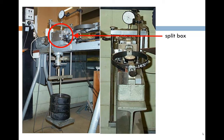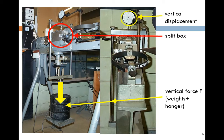This photograph shows where the split box fits into the overall apparatus. The normal stress sigma n is applied by adding weights to the hanger as shown. The vertical displacement of the lid of the shear box can be measured by a dial gauge during shearing. This device is called a proving ring, which is calibrated so that its deflection can be used to calculate the horizontal or shear force applied to the sample.